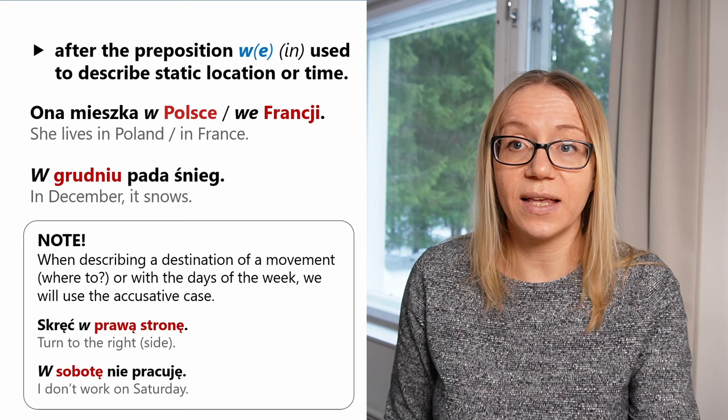One more thing about 'po': we won't use the locative case after 'po' when describing the way we do things or the language we speak. In those situations it's the dative case with a 'u' ending — an archaic form. For example: 'Zrobię to po swojemu' — 'I will do it my way.' Or 'Mówię po polsku' — 'I speak Polish.' Here 'po polsku' is not the locative case but a special old dative form.